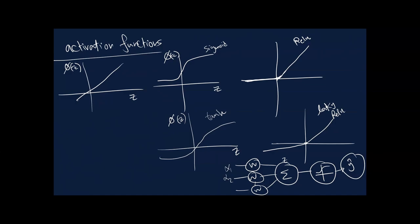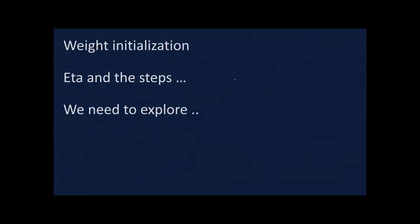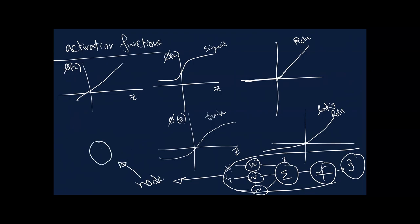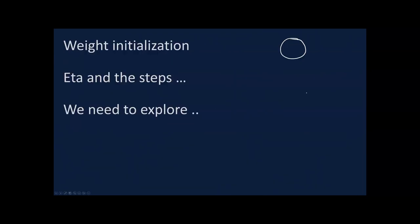All of this — inputs, weights, net input z, and activation function — can be summarized as one node, represented by a circle. If we stack many of these nodes together we get a layer in a neural network.